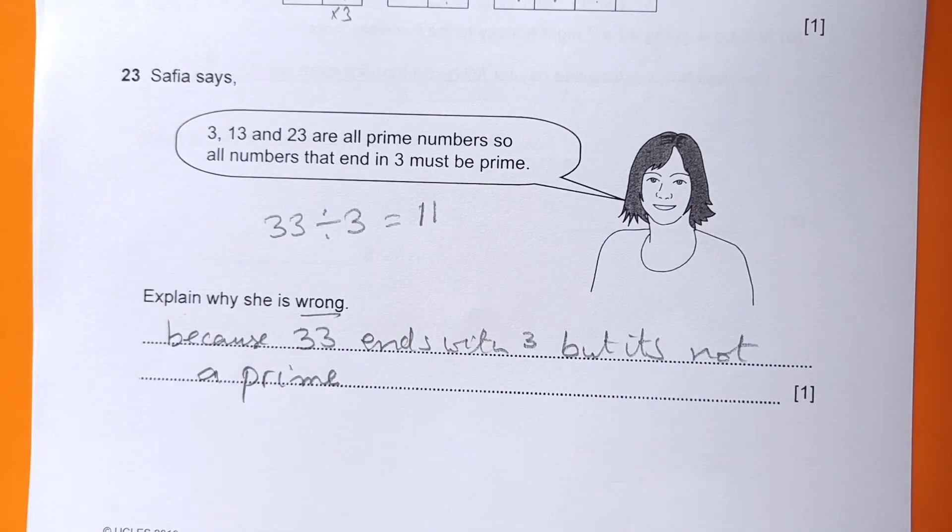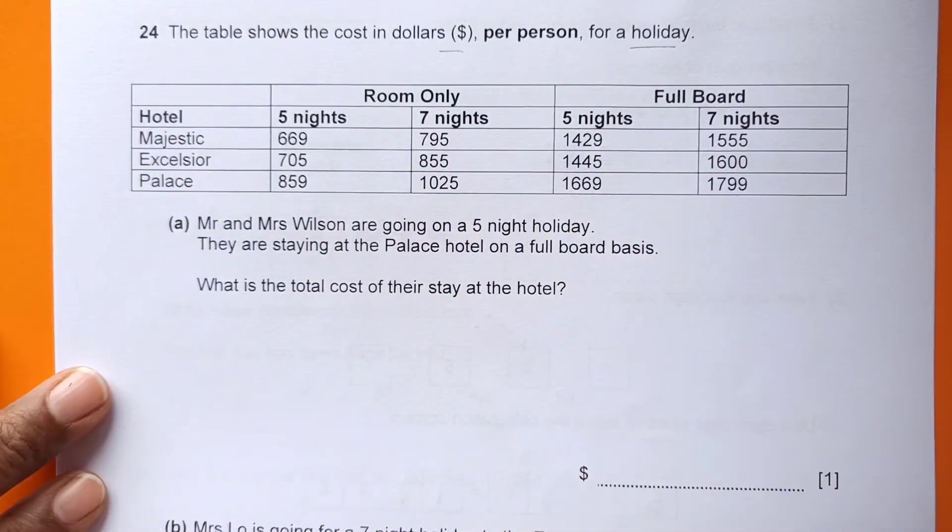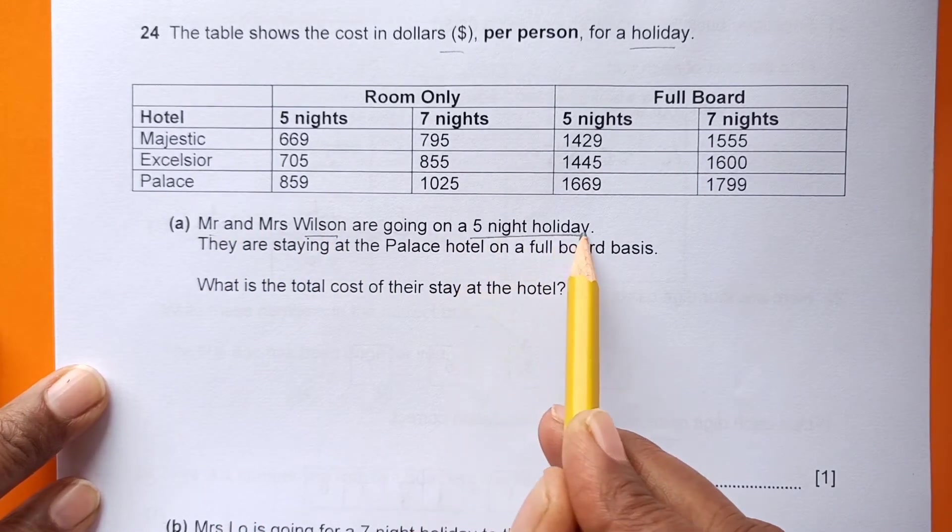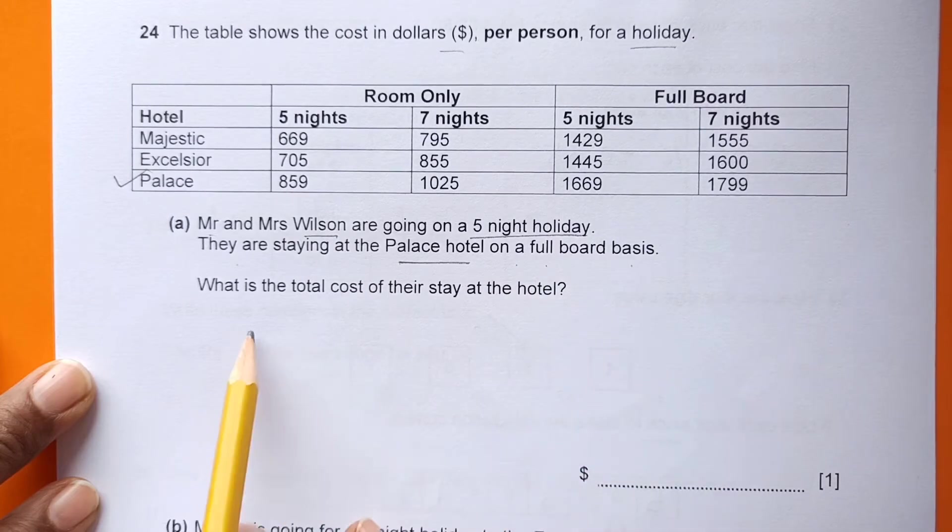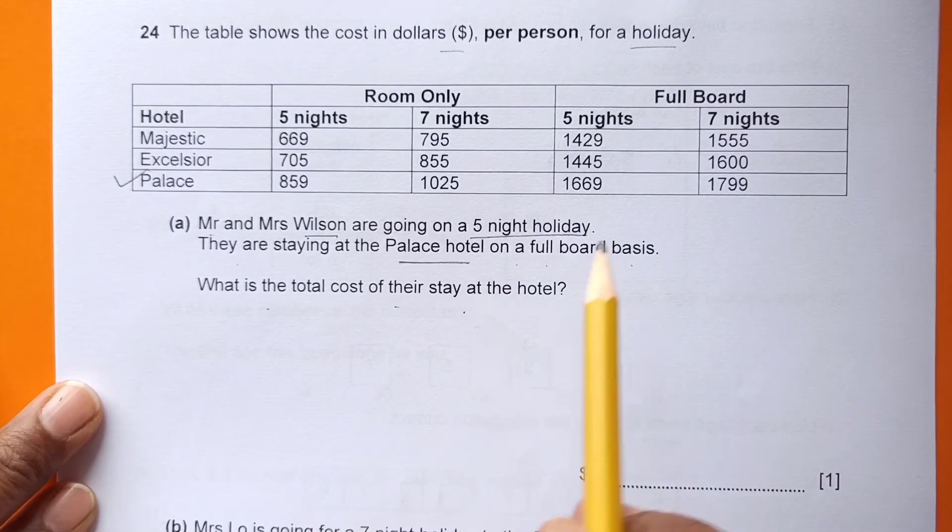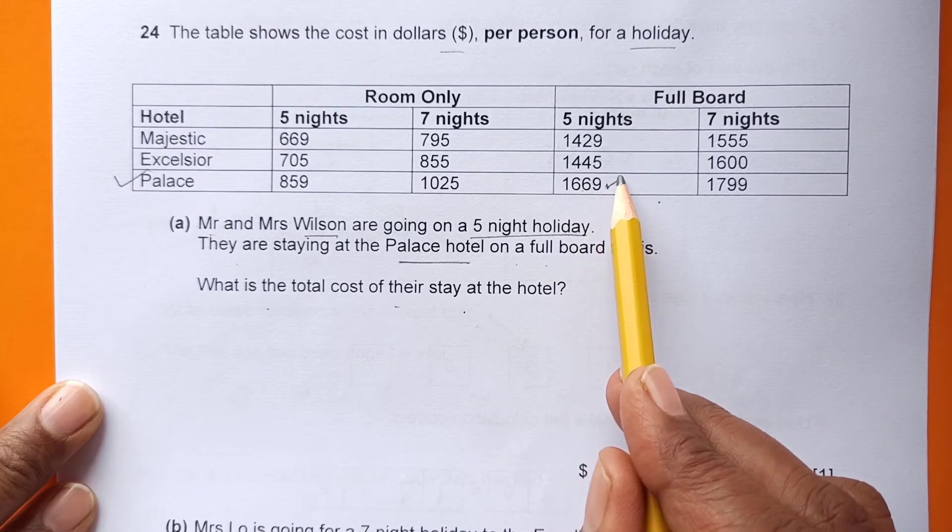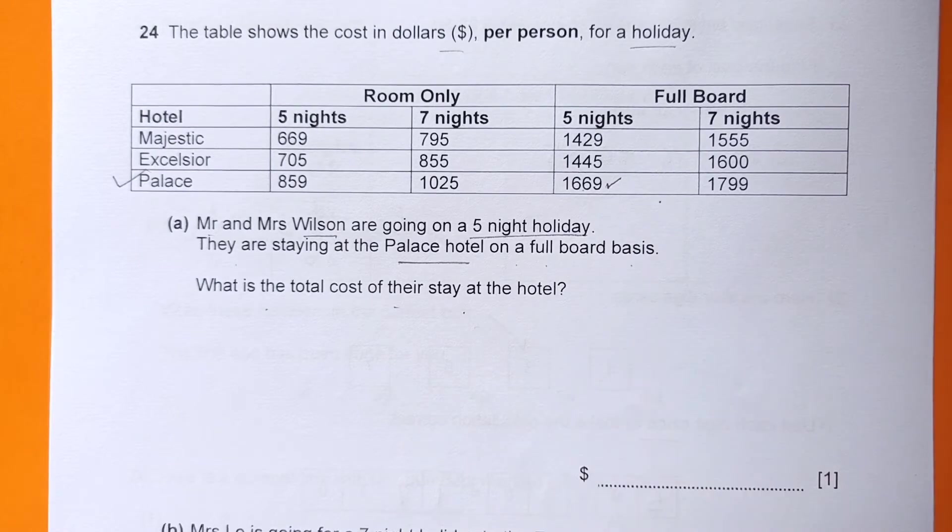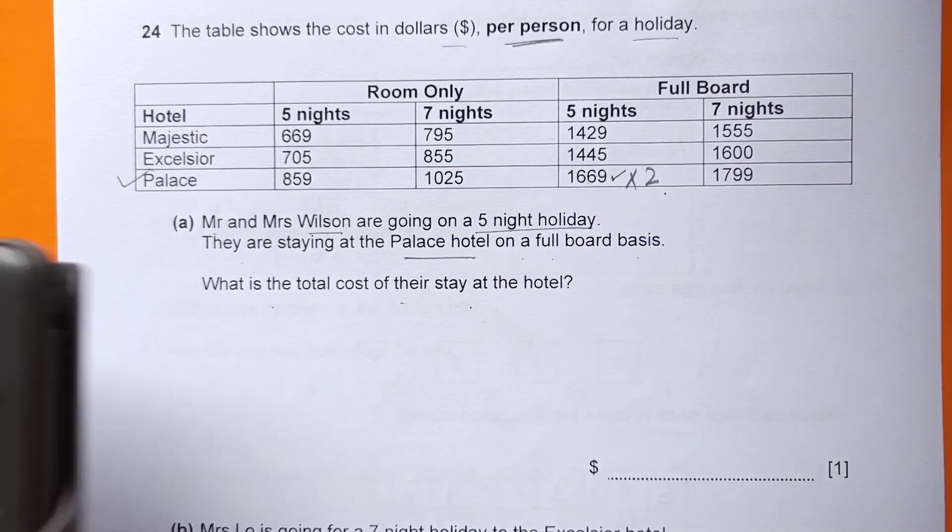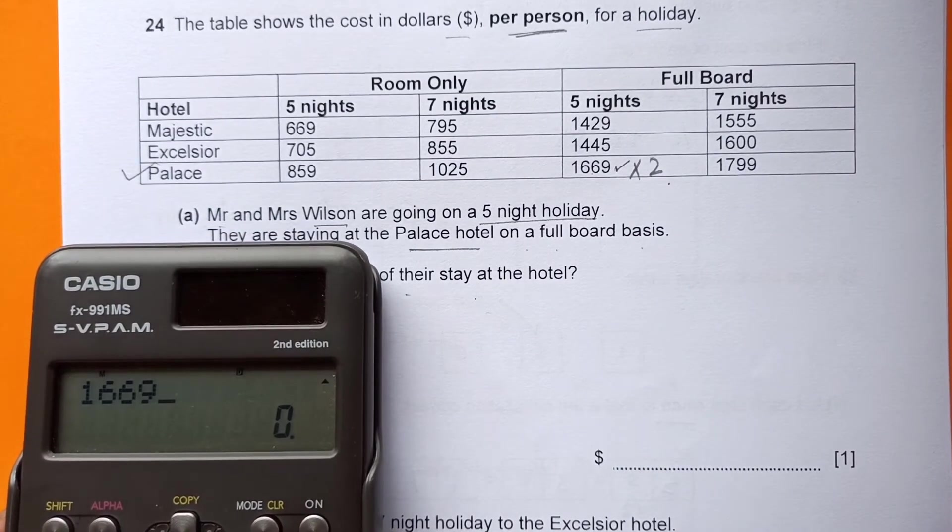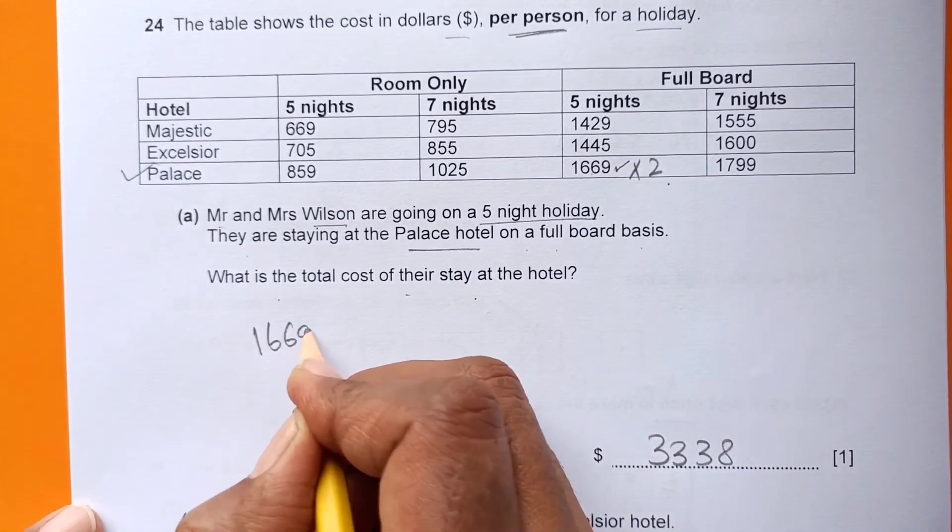Number 24: The table shows the cost in dollars per person for a holiday. Mr. and Mrs. Wilson are going on a five-night holiday. They are staying at Palace Hotel on a full board basis. What is the total cost of their stay at the hotel? Full board is here, and they are going to stay five nights. This is the cost per person, so times two because they are two people. 1669 times 2 equals $3338.